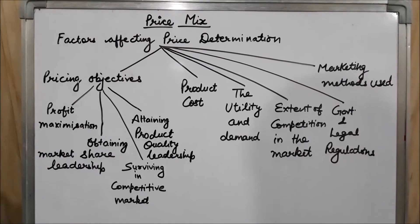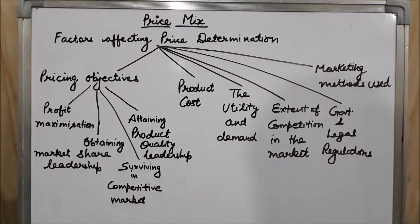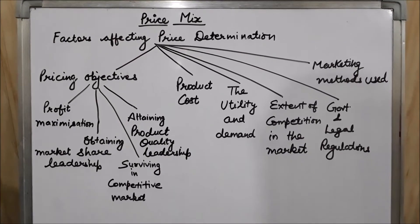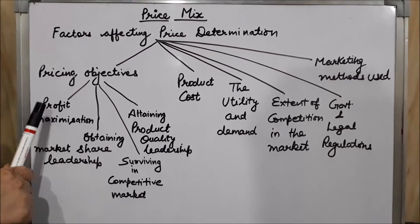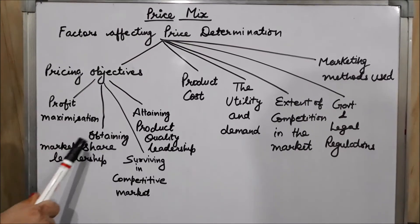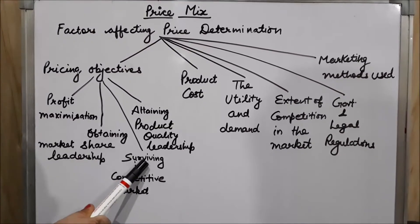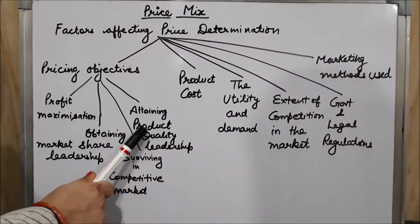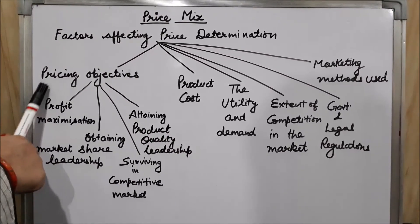The next pricing objective is attaining product quality leadership. If a firm wants to produce and sell quality products, they have to keep a high price for the product to maintain quality and to fund research and development activities. In summary: high price for short-run profit maximization; low price for long-run profit maximization; low price for maximum market share; schemes and promotions to survive in a competitive market; and high price for product quality leadership. This is the first factor — pricing objective.